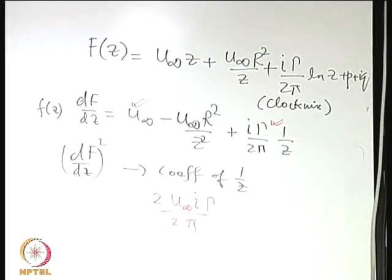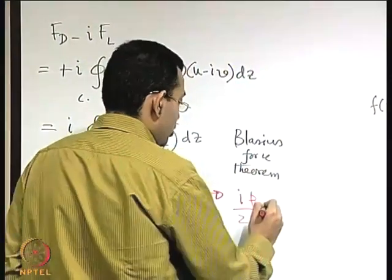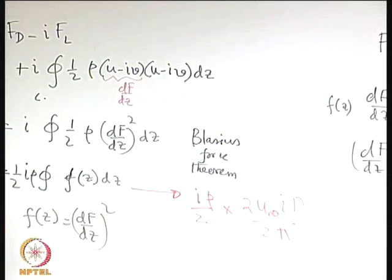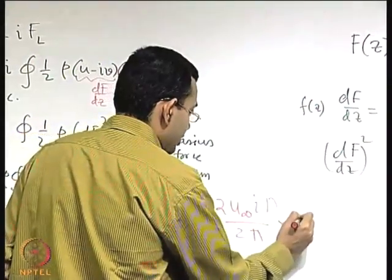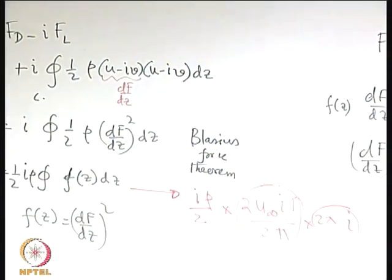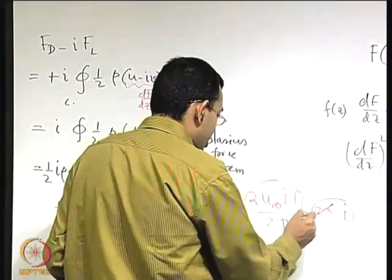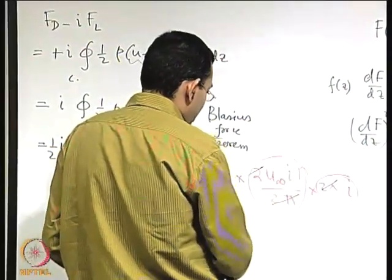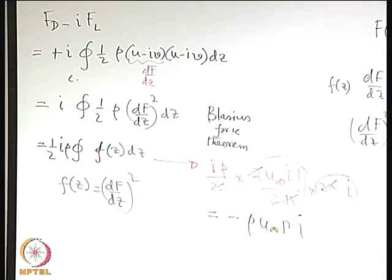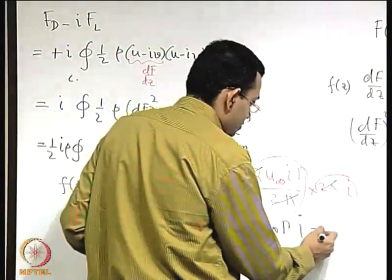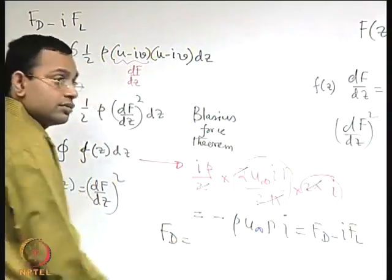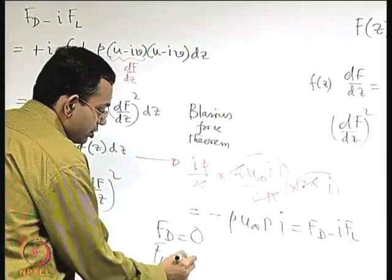Applying the residue theorem: F_D − iF_L = (iρ/2) · 2πi · 2u∞ · iγ/(2π). Simplifying — the 2π cancels, the 2 cancels, and i² = −1 — giving F_D − iF_L = −ρu∞γ · i. Therefore the drag force F_D = 0 and the lift force F_L = ρu∞γ.